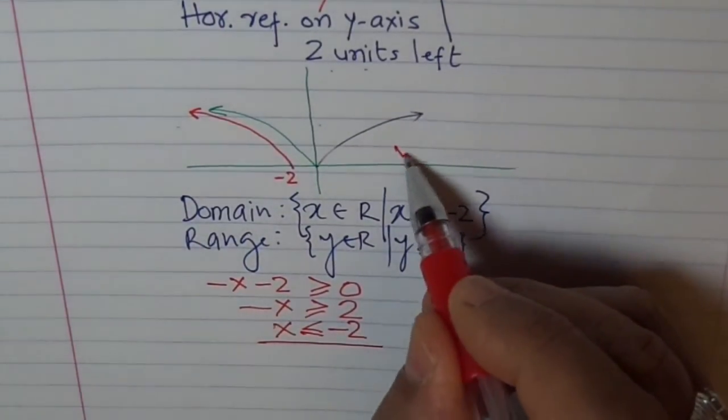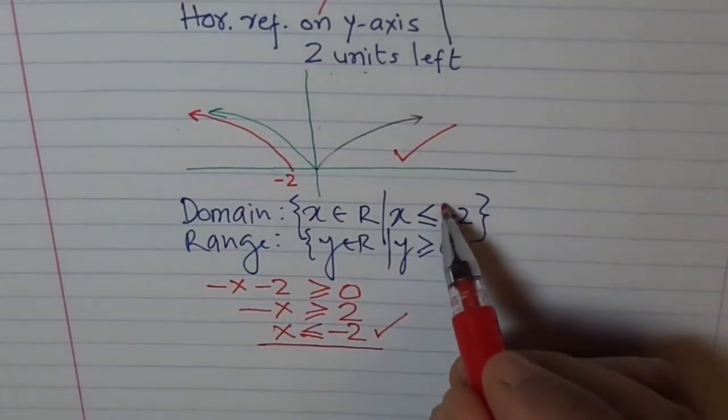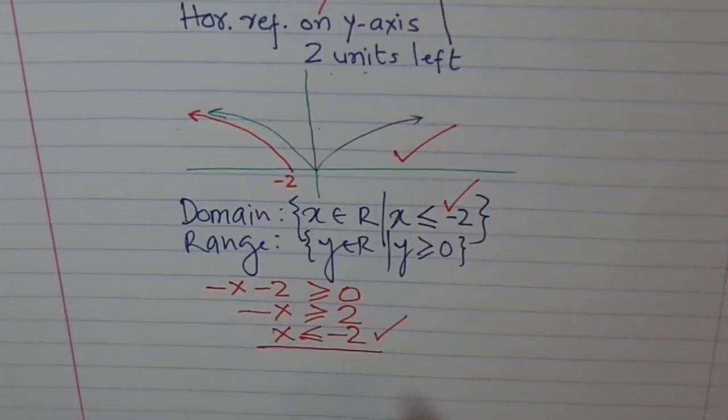So this is absolutely right. And that is our domain, as you can see. And range is not getting affected. It is greater than equal to zero. This is very important for you to understand. In each transformation, especially inside the function part, I would like you to factor whatever is the coefficient of x and then proceed. Otherwise, you may get a wrong answer. Remember this for all times to come. Thank you. I hope you appreciate it.